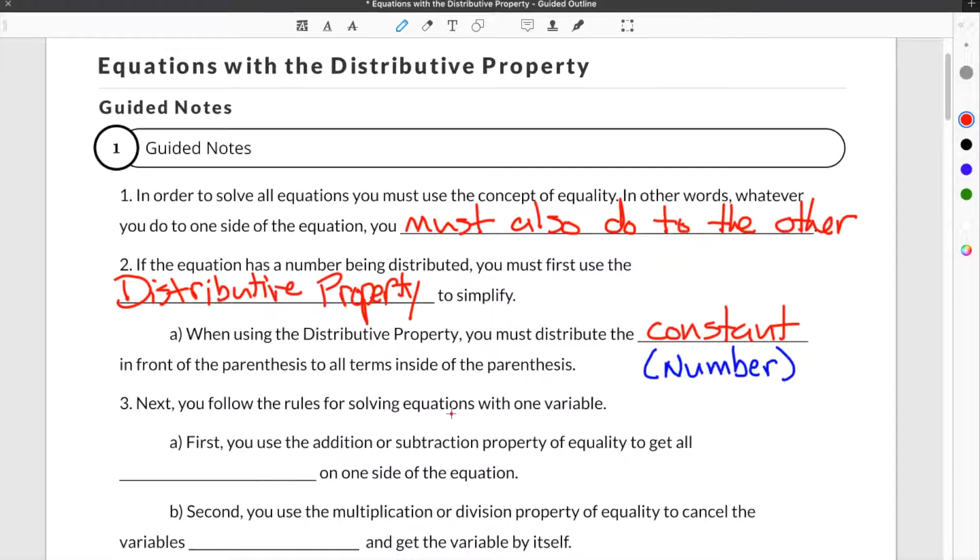Next, you follow the rules for solving equations with one variable. First, you use the addition or subtraction property of equality to get all constants on one side of the equation. And then you use the multiplication or division property of equality to cancel the variable's coefficient and get the variable by itself.